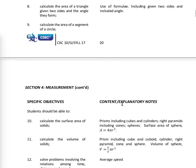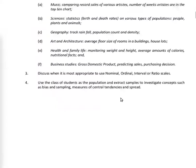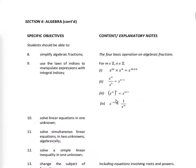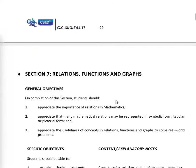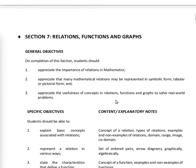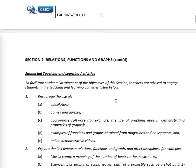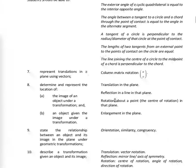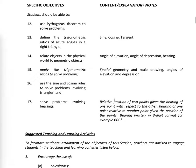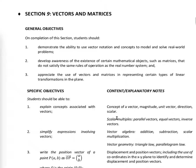Section four — measurement. Section five — statistics. Section six — algebra. Relations, functions, and graphs is section seven. Section eight — geometry and trigonometry. Then section nine — vectors and matrices.